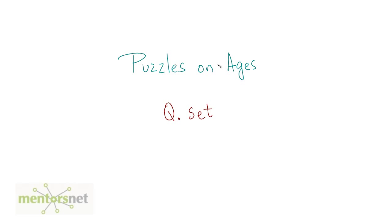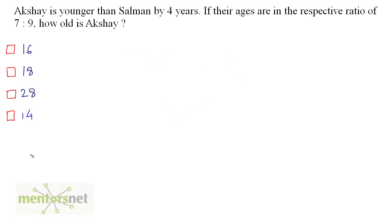This is a question set on ages. Let us get started with the first question. Akshay is younger than Salman by 4 years. If their ages are in the respective ratio of 7 is to 9, how old is Akshay?